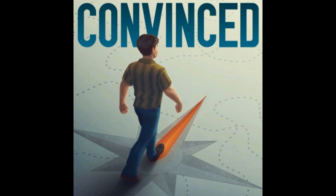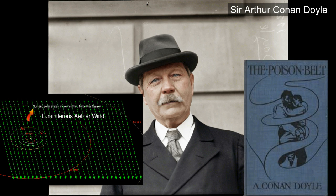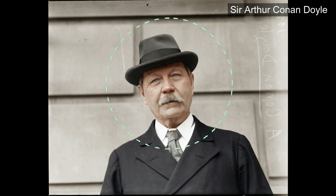They were so convinced of the reality of this medium that there is even a novel called The Poison Belt, written by Sir Arthur Conan Doyle, in which the solar system passes through a poisonous region of ether. In case you don't know who this guy is, he's the creator of the famous detective Sherlock Holmes.